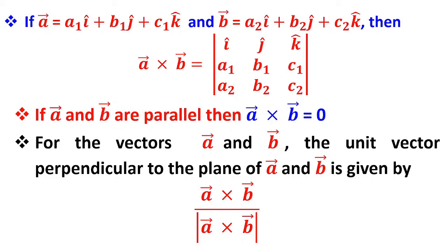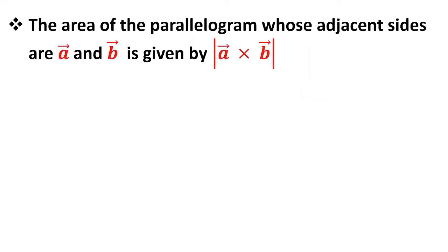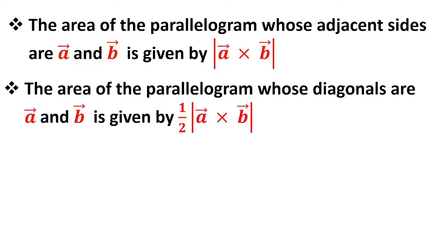The unit vector perpendicular to the plane of a and b is given by (a × b) / |a × b|. If a and b are adjacent sides of a parallelogram, the area of the parallelogram is |a × b|. If instead the diagonals of the parallelogram are given as a and b, then the area is half of |a × b|.